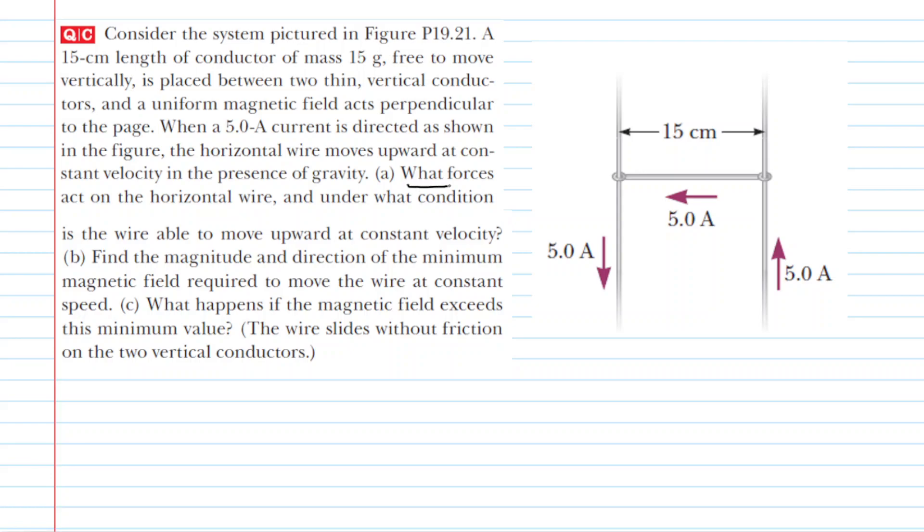Part A asks us what forces act on the horizontal wire, and under what condition is the wire able to move upward at constant velocity? Let's begin with the first part of that question. We have this conductor horizontally oriented right here.